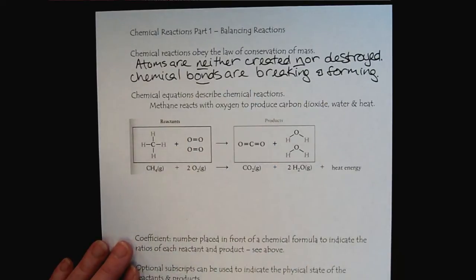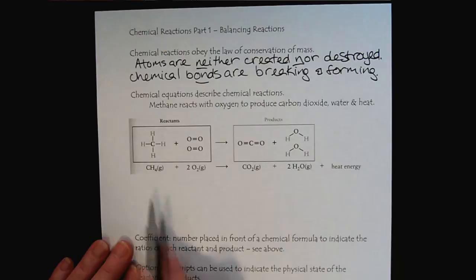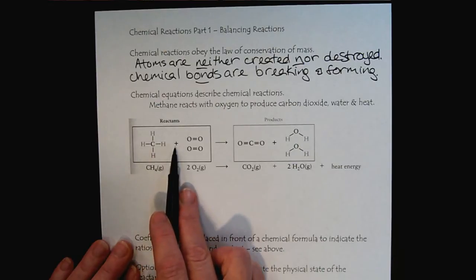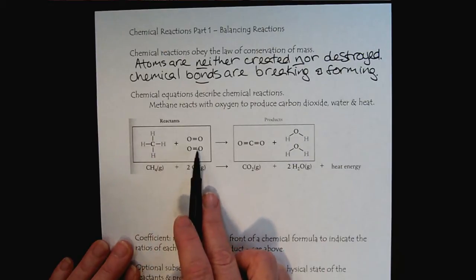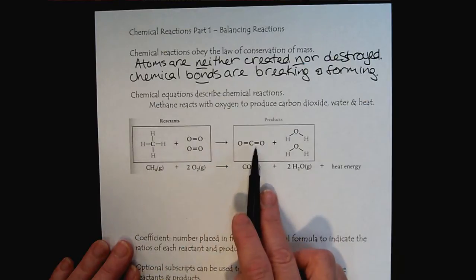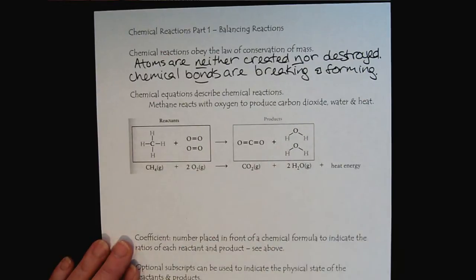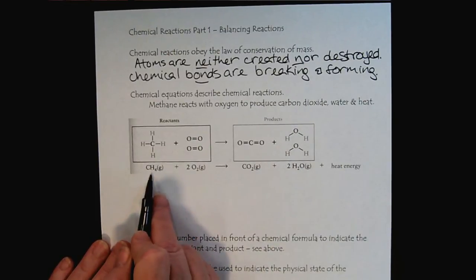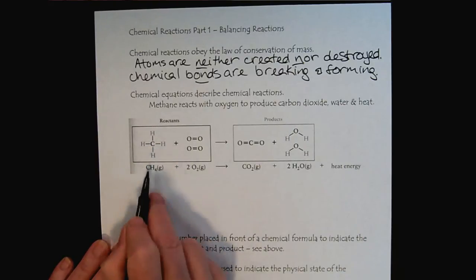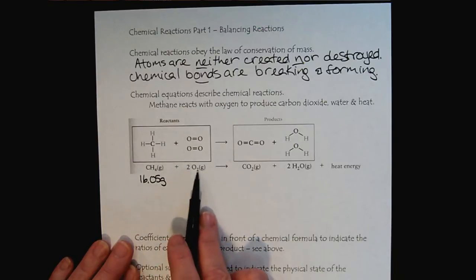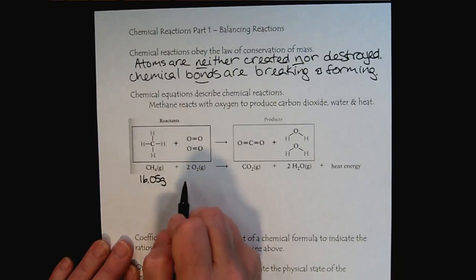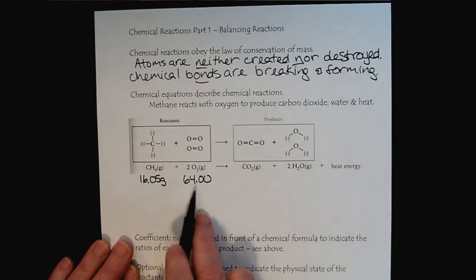Let's look at an example. Here we have methane reacting with oxygen to produce carbon dioxide and water. If we look at this from a very physical perspective, we could look at the molar mass of methane. Since there's one mole reacting, we would put 16.05 grams. We would have two moles of oxygen, so that would correspond to 64 grams of oxygen.